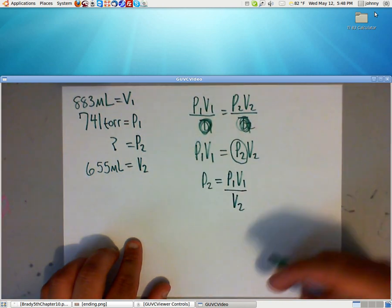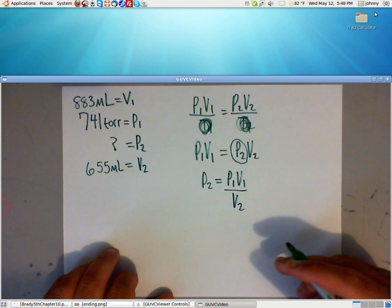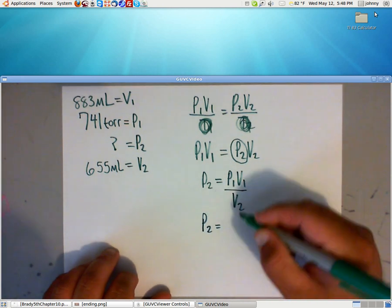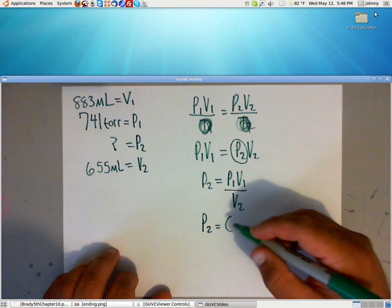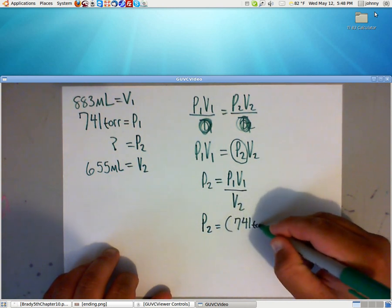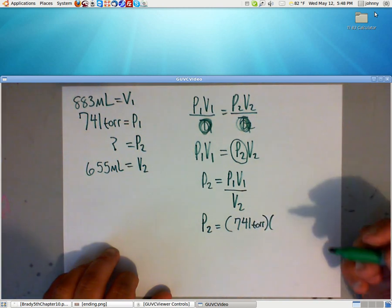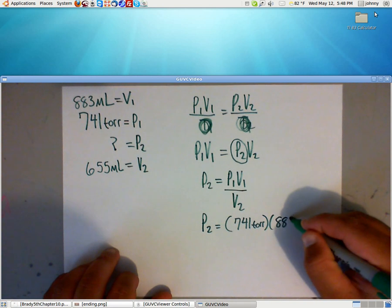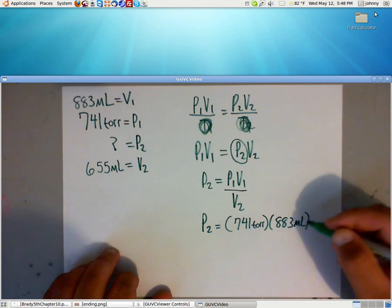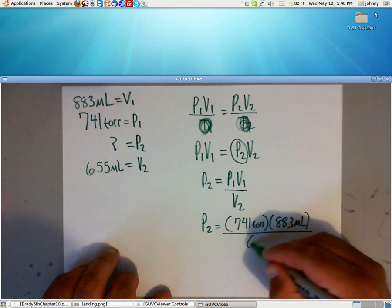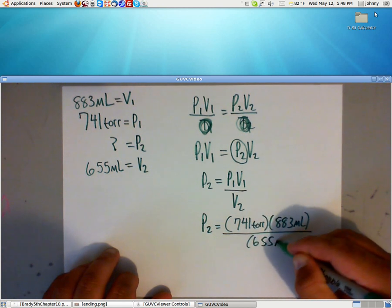After this, you just need to substitute in for P1, V1, and V2. So you get P2. So basically, our P1 is 741 torr. And our first volume was 883 milliliters. And our last volume is 655 milliliters.